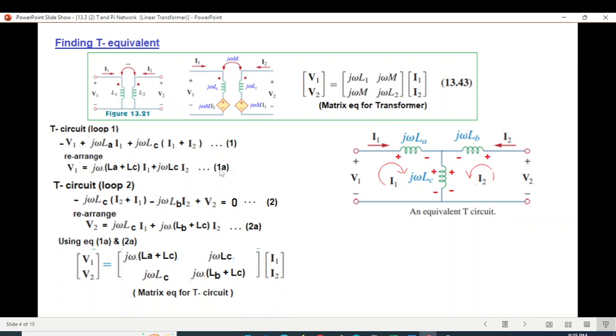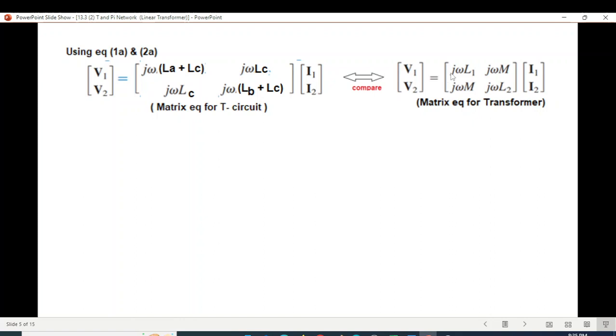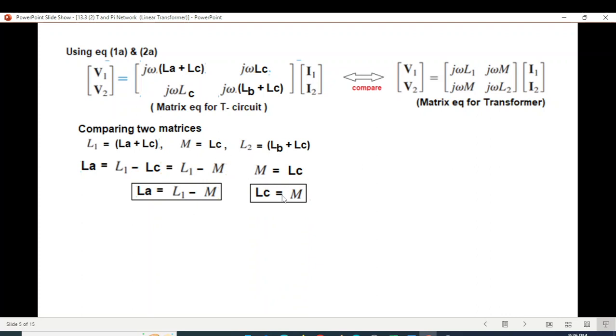And here also we'll write the matrix equation. So from equation 1a and 2a we can write this matrix equation. And now we are in a position to compare the two. This was for the T network and this is for the transformer network. Comparing the two we will find the parameters La, Lb, Lc. Simple, you just compare these two. You can write L1 equals La plus Lc. Similarly Lc equals M. And third one is L2 equals Lb plus Lc. And from here with little manipulation we can find La. Lc is M directly from here. And Lb from this one is L2 minus M. So these are the three values of the Pi network. And so our equivalent circuit will now become like this. La is L1 minus M, Lb is L2 minus M, and Lc is M.